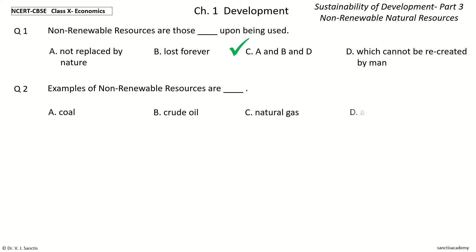Question two: Examples of non-renewable resources are — the options are coal, crude oil, natural gas, all of these. The answer is all of these: examples of non-renewable resources are coal, crude oil, and natural gas.